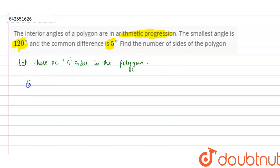As we know, the sum of all interior angles of a polygon is equal to (n-2) times 180 degrees.